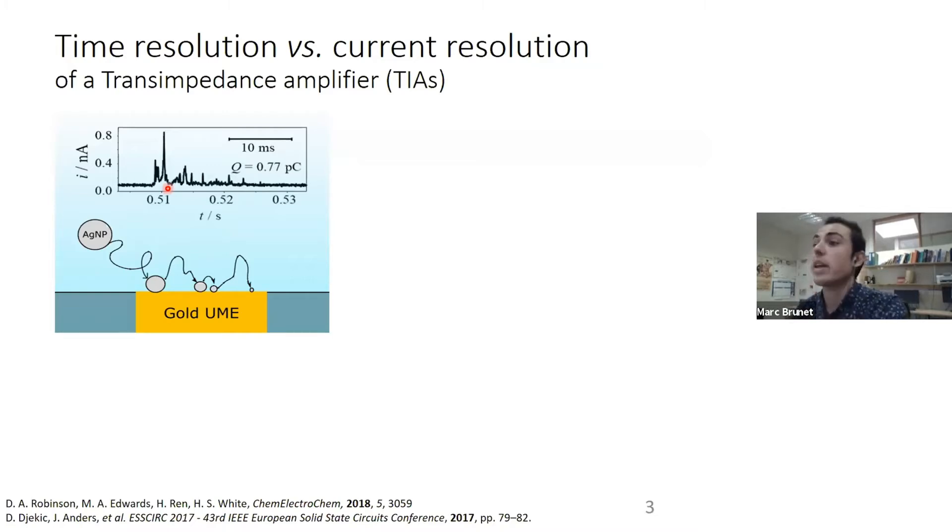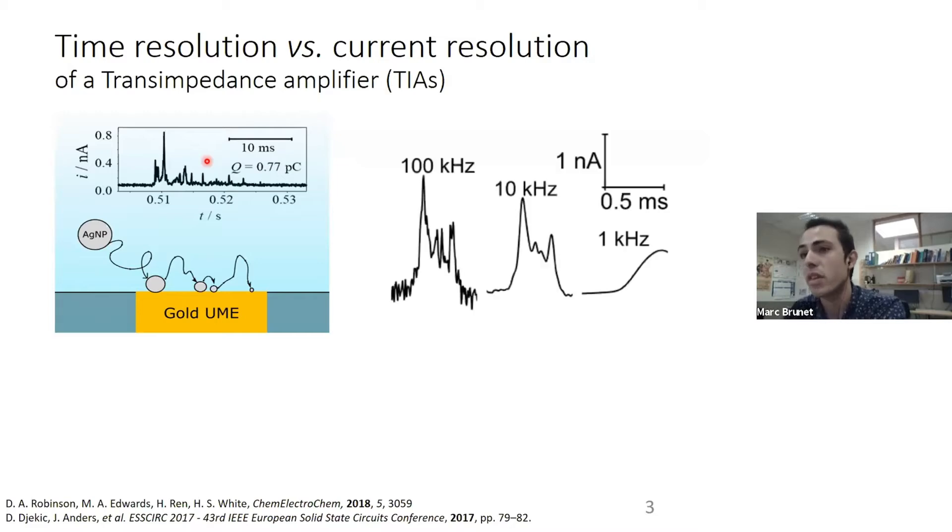These types of signals that are very characteristic for single nanoentity measurements are pretty difficult to process from an instrumentation perspective, because normally the current amplifier limits the temporal resolution we can have in those types of measurements. For instance, here in the second figure, we see how by using too low bandwidth current amplifier and too low bandwidth to store the signal, all the information that we initially have is completely lost.